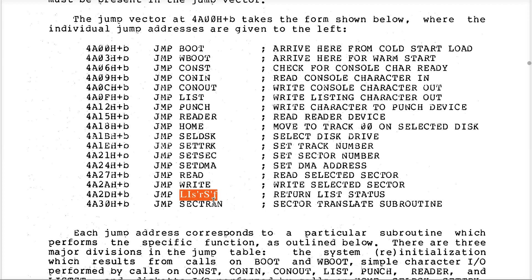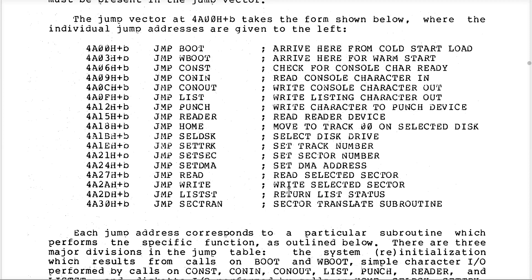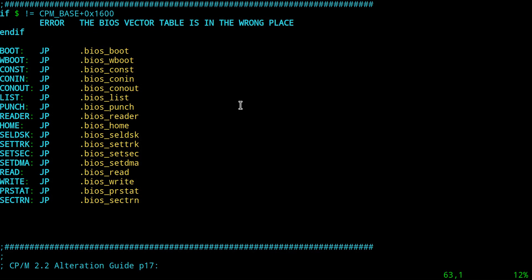List status — nothing uses it but one routine, we can stub that in. Then there's sector translation logic that technically doesn't apply to us at all, so we're going to stub that in by just returning the passed-in data. So we can stub in almost every single thing here right now except for the warm boot code, the read code, and the write code. This video we're going to do every single one of these except for reading, writing, and part of the warm boot.